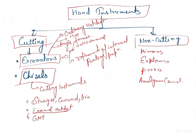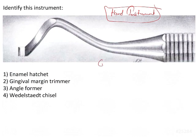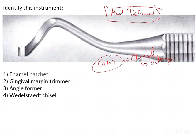The gingival marginal trimmer (GMT) is a type of chisel whose primary function is cutting. It is designed to produce a proper bevel on gingival enamel margins in proximoocclusal preparations. So when you have a Class 2 cavity with a proximoocclusal line angle, you use the GMT to perform the required beveling.